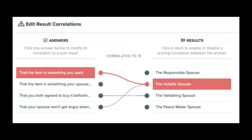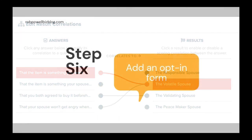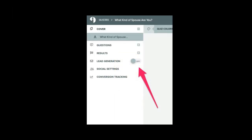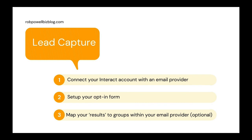The correlation works like this: every line going from an answer to a result adds a value of plus one to that result. Step six: add an opt-in form to your quiz. Turn on Lead Generation in the left-side menu. You'll then need to do three things: one, connect your Interact account with an email provider such as Aweber, MailerLite, MailChimp, ConvertKit, etc.; two, set up your opt-in form; and three, map your results to groups within your email provider. The last step, though, is optional.